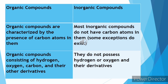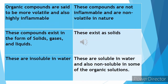Two, organic compounds consist of hydrogen, oxygen, carbon, and their other derivatives, while inorganic compounds do not possess hydrogen or oxygen and their derivatives. Next, organic compounds are said to be more volatile and highly flammable, while inorganic compounds are not flammable and are non-volatile in nature.